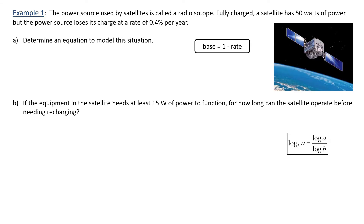Example 1. The power source used by satellites is called a radioisotope. Fully charged, a satellite has 50 watts of power. But the power source loses its charge really slowly — that's not even 4%, that's 0.4% per year. That's how it loses its power. It has solar panels that collect most of the power that's needed. Determine an equation to model this situation. Remember that our base is 1 minus the rate because we have a percentage question here.